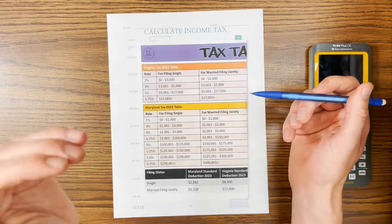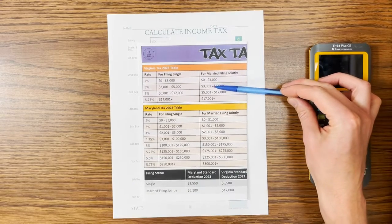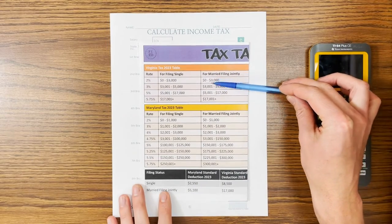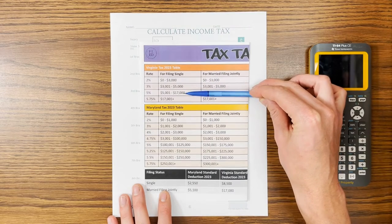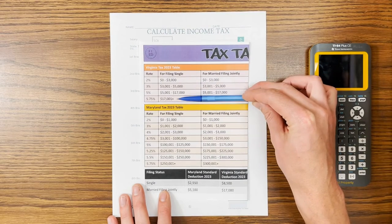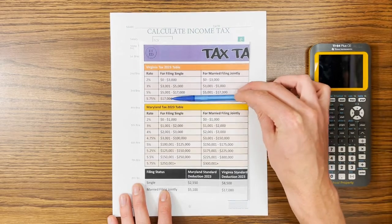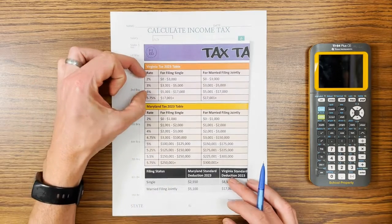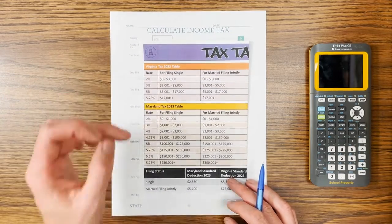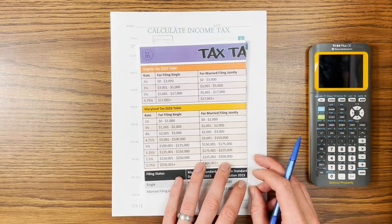They have four brackets for progressive tax. The first two are pretty small — $3,000 and $2,000. Then it goes up to $12,000. And then pretty much most people living in Virginia are paying in this $17,000 plus bracket. So if you are a low income earner, you might be in the smaller brackets, but most of us will be paying 5.75% on our income in Virginia.